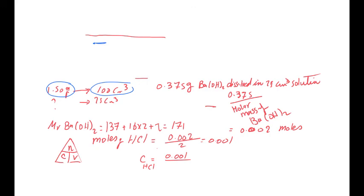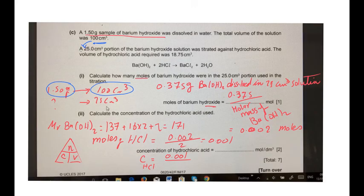And then we took from this amount a 25 cm³ portion of barium hydroxide solution. And he is asking here how many moles of barium hydroxide were dissolved in 25 cm³ portion.